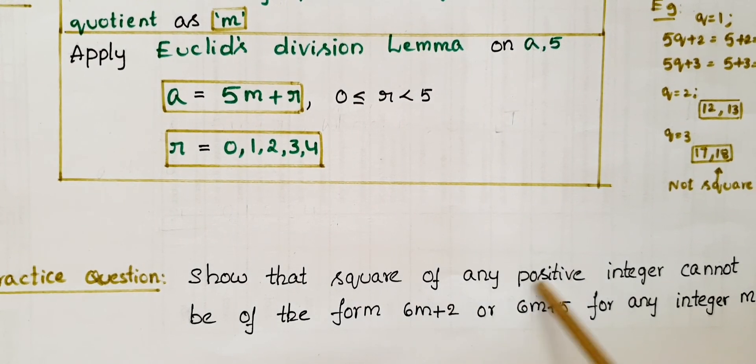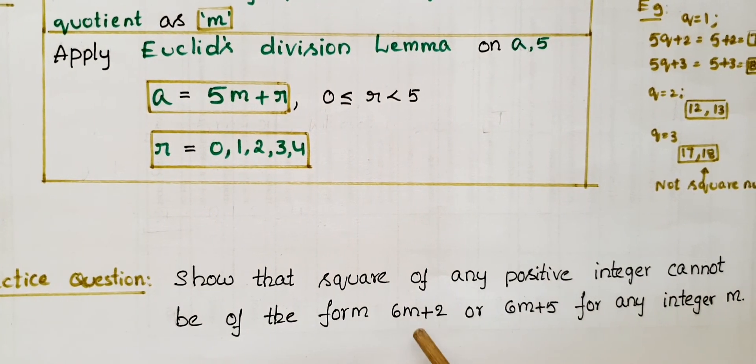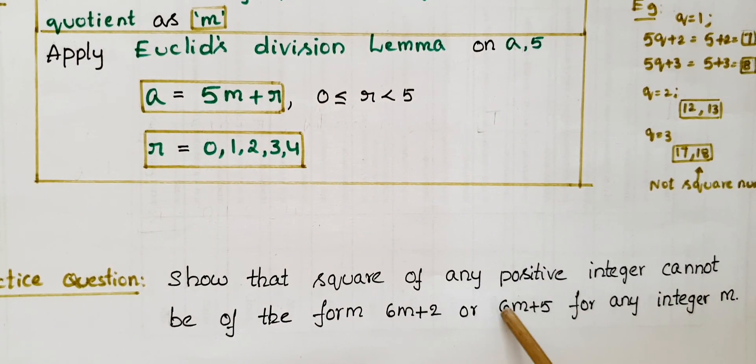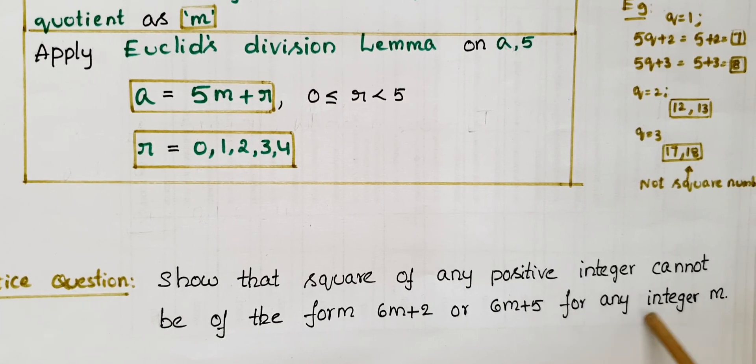Practice question: Show that the square of any positive integer cannot be of the form 6m plus 2 or 6m plus 5, for any integer m.